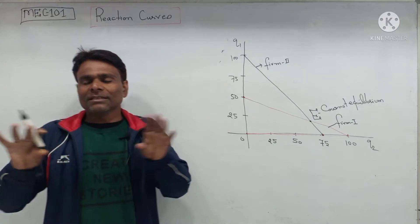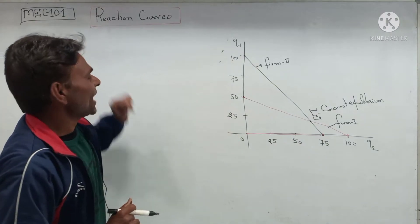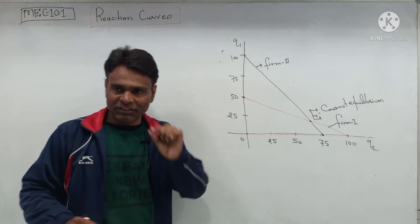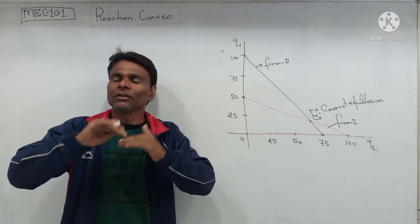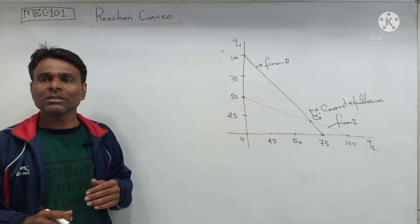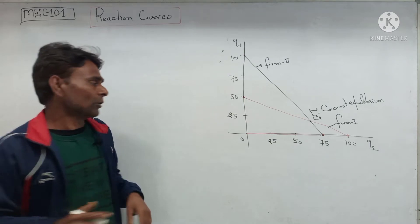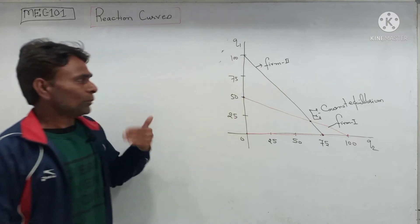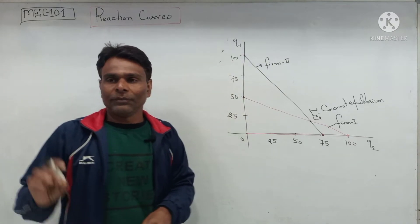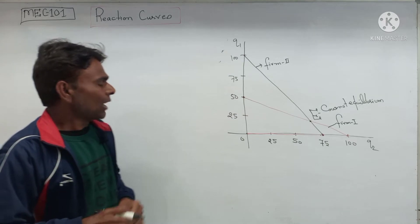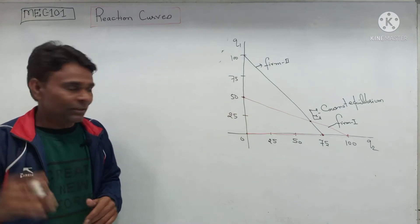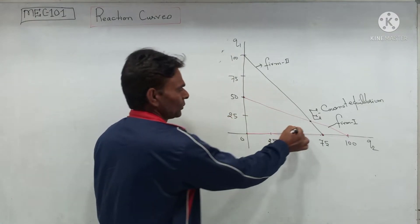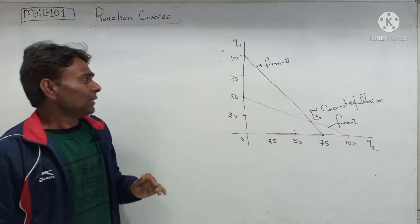Graphically, you can easily grasp the concept of the reaction curve. Suppose firm one thinks its competitor will produce zero output — then firm one produces 50 units. Now if firm one thinks its competitor will produce 50 units of output, then firm one produces 25 units of output.